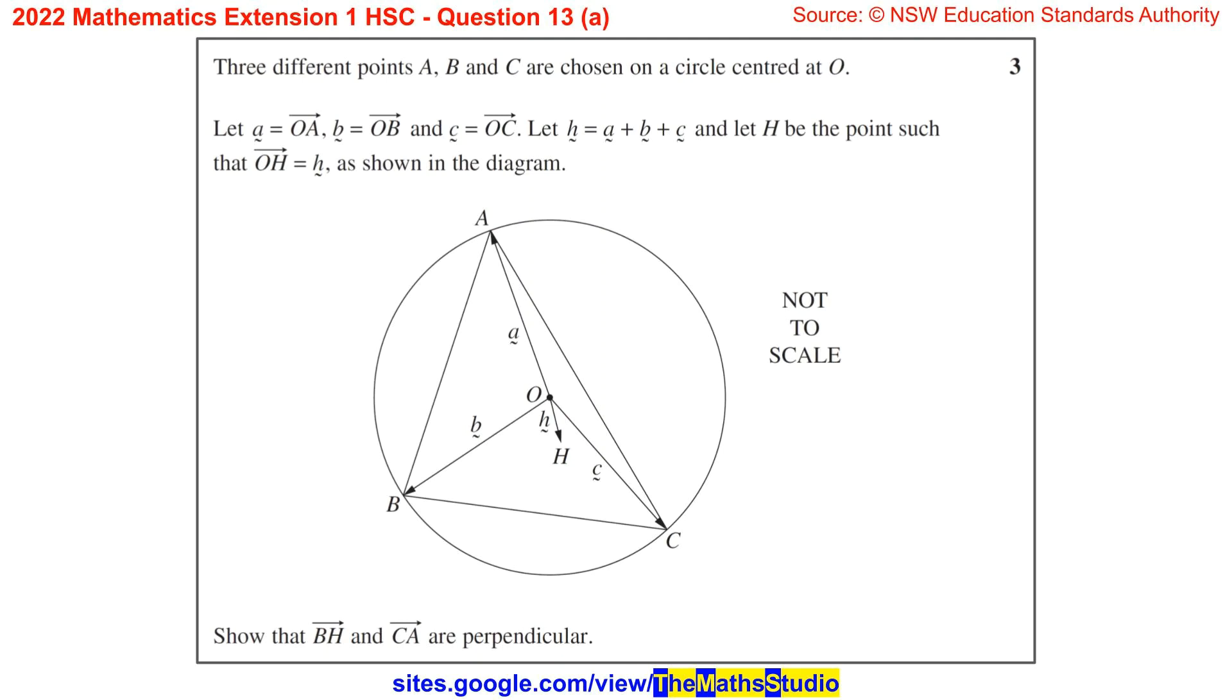Question 13a. Three different points A, B and C are chosen on a circle centered at O.